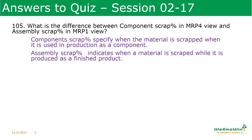What is the difference between component scrap percentage in MRP4 view and assembly scrap percentage in MRP1 view? Component scrap percentage specifies what material is scrapped when it is used in production as a component. Assembly scrap percentage indicates when a material is scrapped when it is produced as a finished product. Component scrap percentage is maintained in MRP4 view, and assembly scrap percentage is maintained in MRP1 view. You have to be very careful about which percentage of scrap to maintain where.